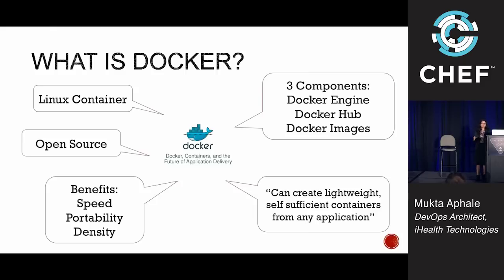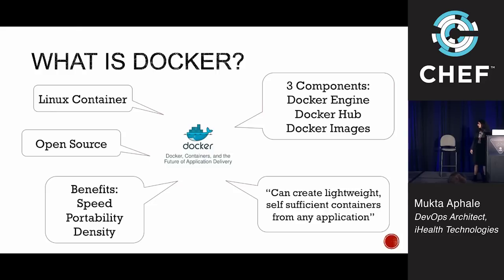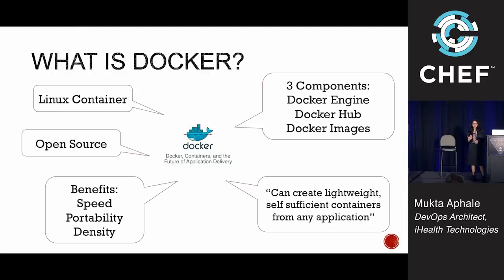Docker Hub is actually a hosted application where you can save your Docker images. It helps you in automating your workflows. Docker images are like a layered file system. Docker is open source, fast, and portable. By density, I mean on a machine you can run more number of Docker containers as opposed to the number of virtual machines that you can run.